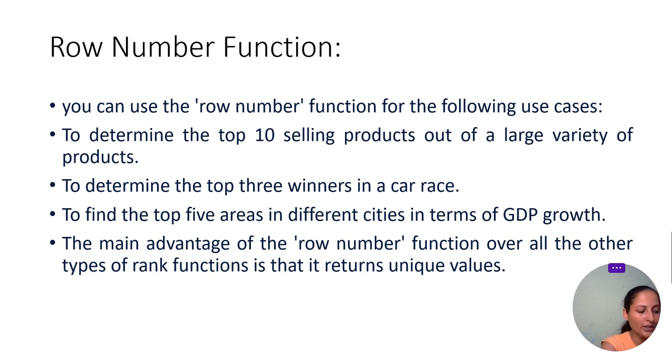One more example: if we have to put a hard cutoff, say top five or top three, and if you are using rank or dense rank, you will see that more than one record has exactly the same rank. Hence, if you put the same filter on top of it, your output will be having more number of rows than the actual cutoff you put.